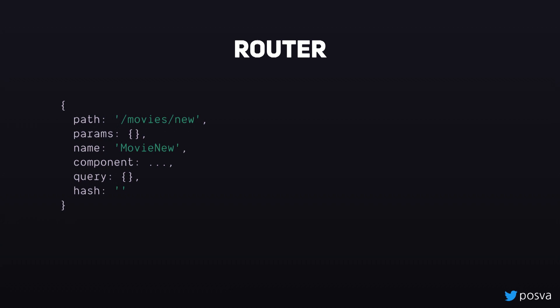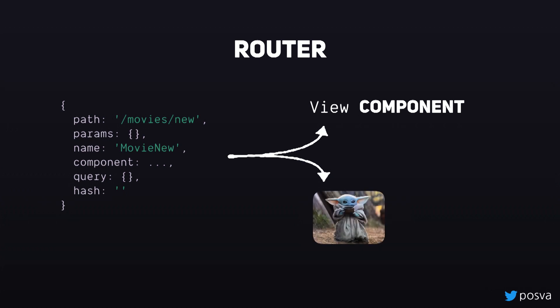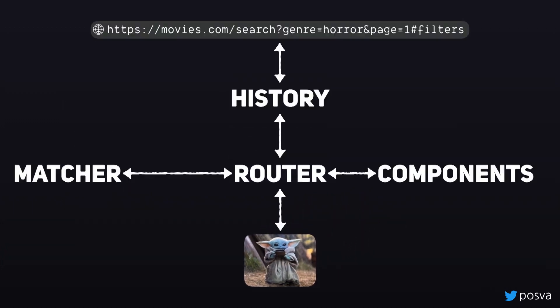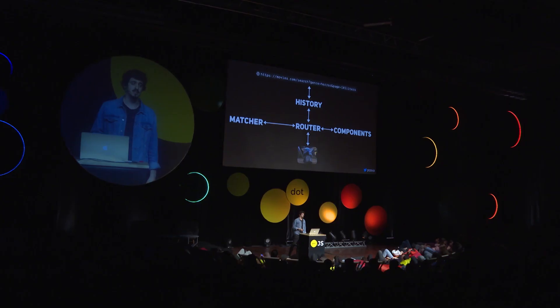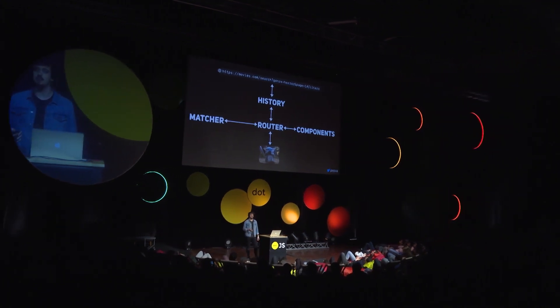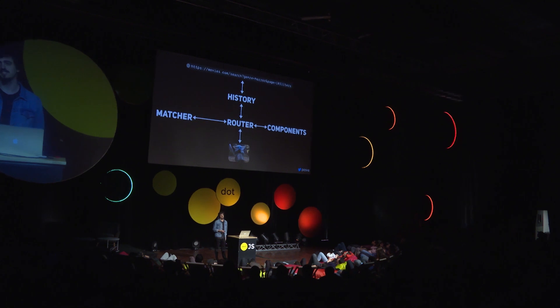We've now gone the full path — this is where the router takes the matched route and gives it to the view component. Depending on the framework it's going to be different, but it's going to display that specific component and also give the route information to you, the developer. That's the big architecture of the router. I hope I didn't discourage you too much with the encoding and all the not-so-pretty stuff. I hope it gives you more interest in looking at the router and contributing to routers. If you want to know more, come say hi — I'll be around. Thank you for your time.